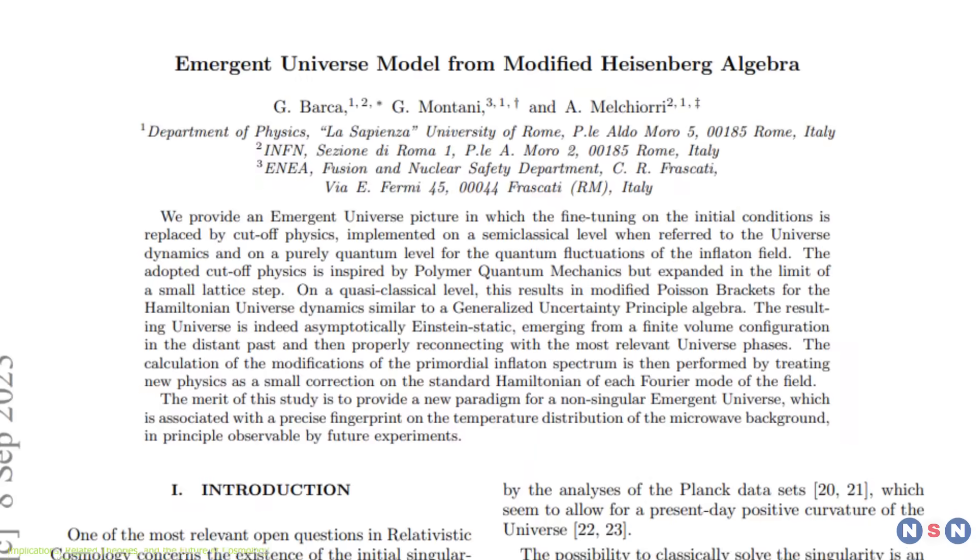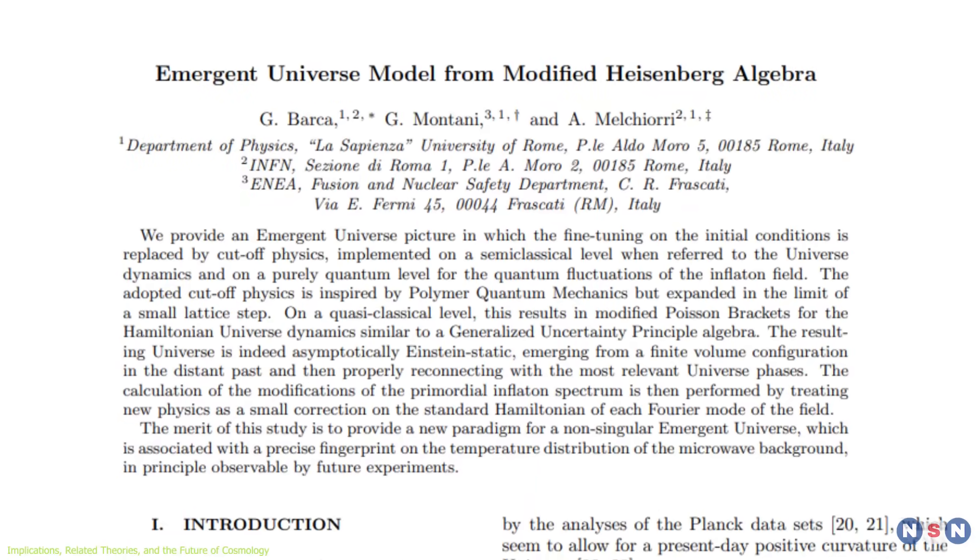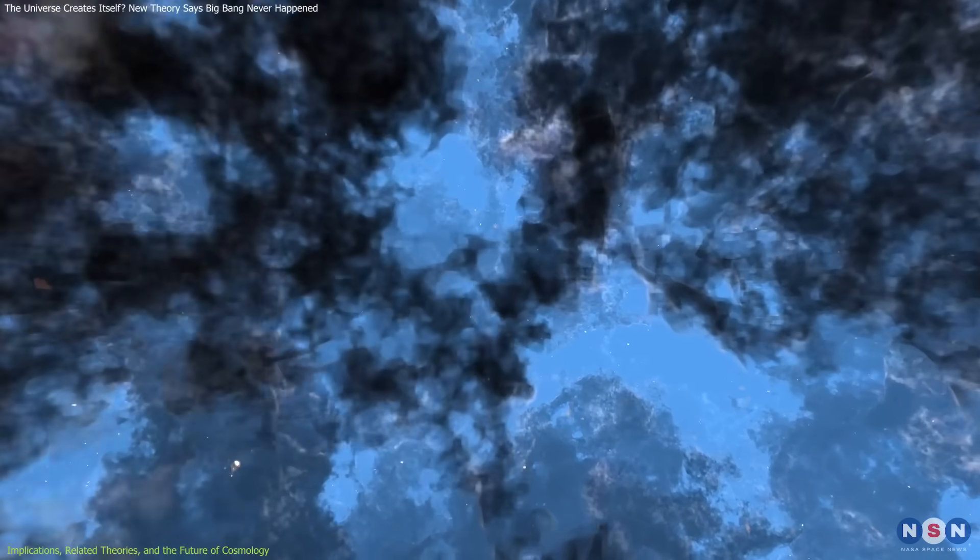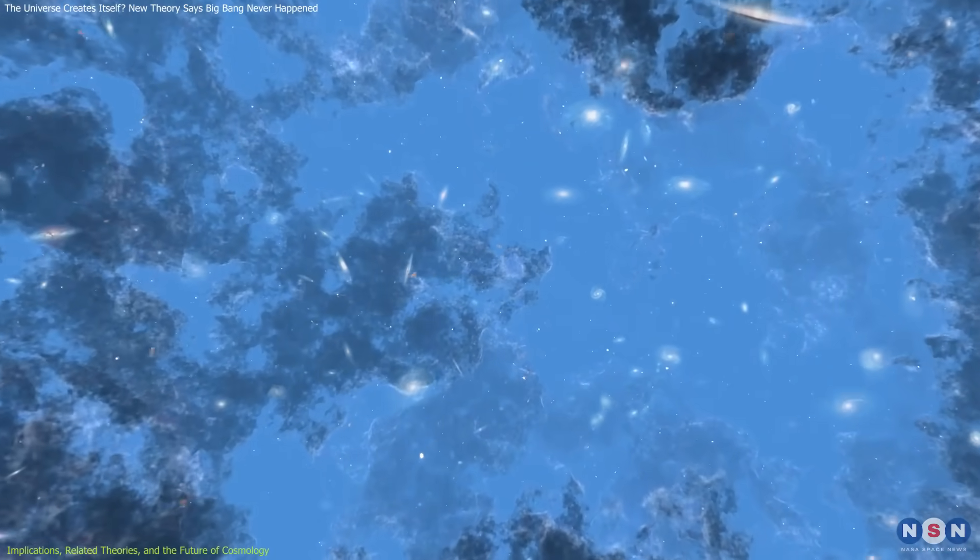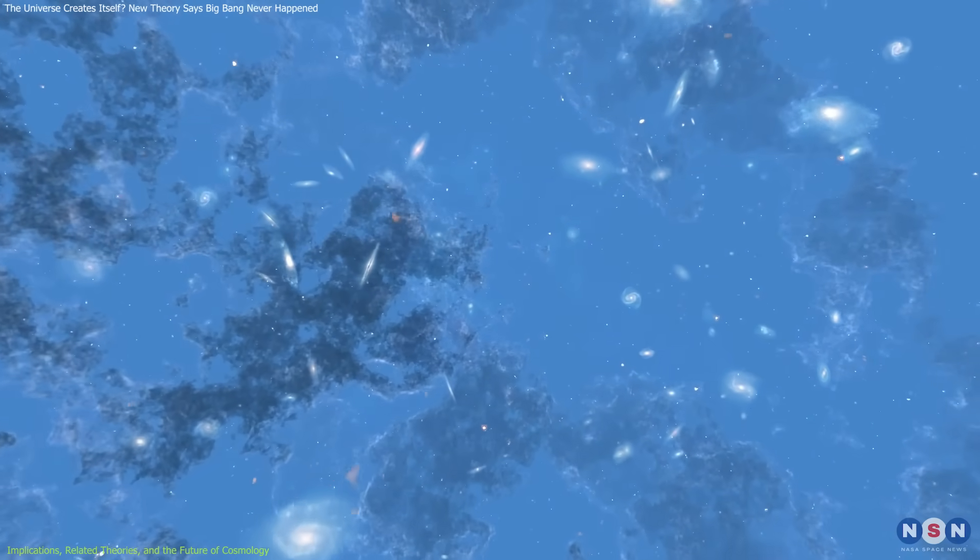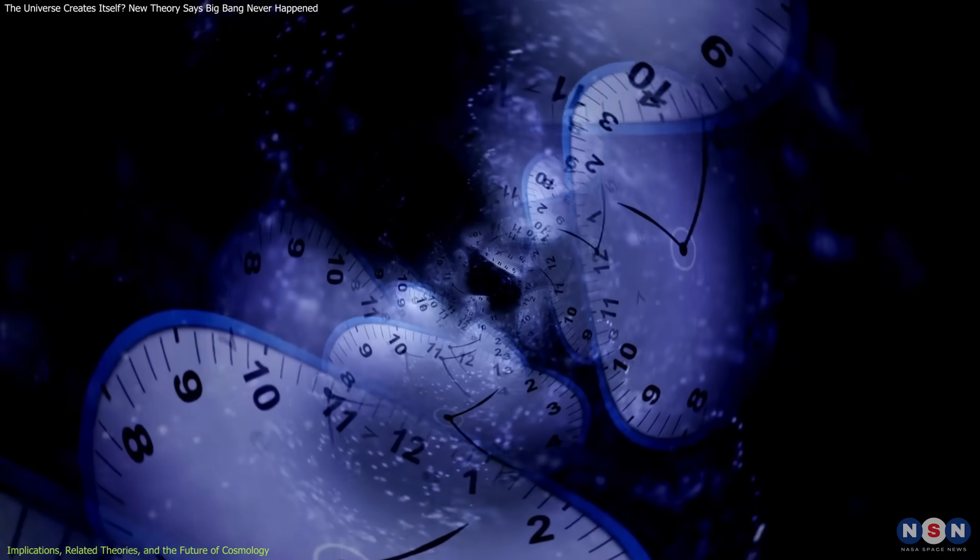Another alternative is the emergent universe model, which proposes that the cosmos existed in a quasi-static state for an infinite amount of time before gradually transitioning into expansion. This smooth transition eliminates the need for a sudden explosive beginning, offering a more continuous evolution of spacetime.